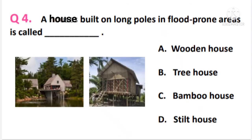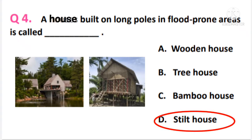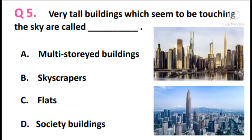Question 4. A house built on long poles in flood-prone areas is called dash. You can refer to the pictures given here. The answer is option D — stilt house.